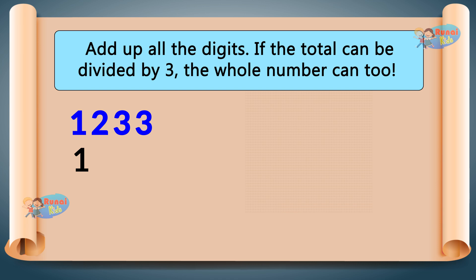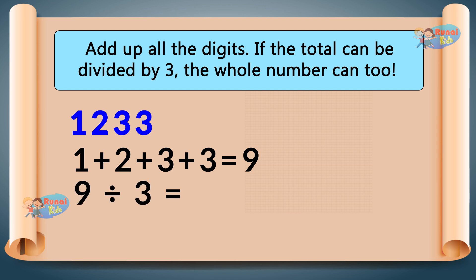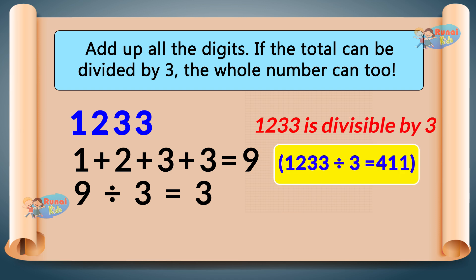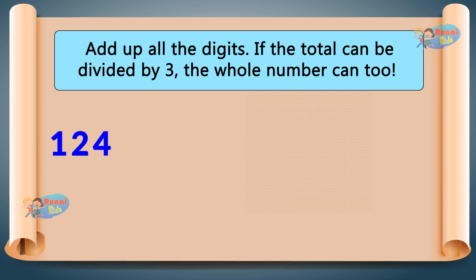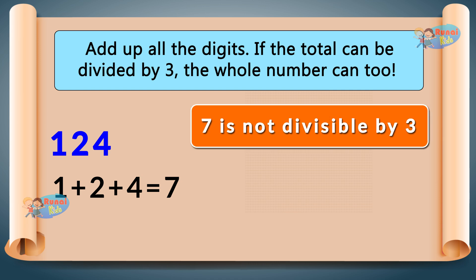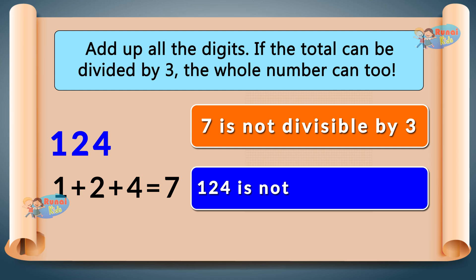1233 — 1 plus 2 plus 3 plus 3 equals 9. Since 9 divided by 3 equals 3, 1233 is divisible by 3. 124 — 1 plus 2 plus 4 equals 7. Since 7 is not divisible by 3, 124 is not divisible by 3.